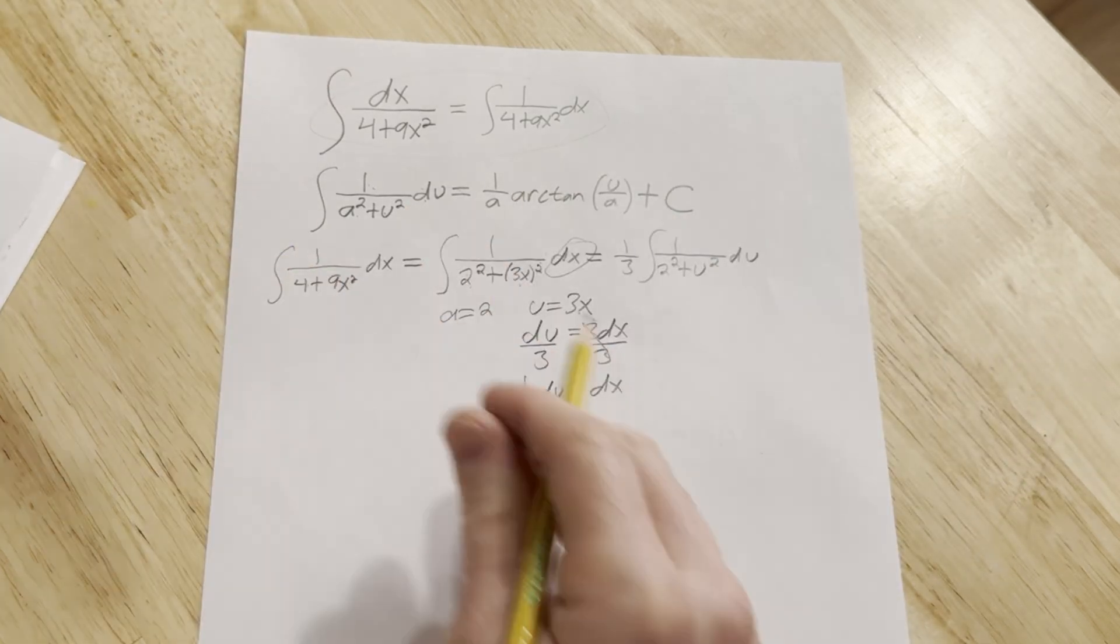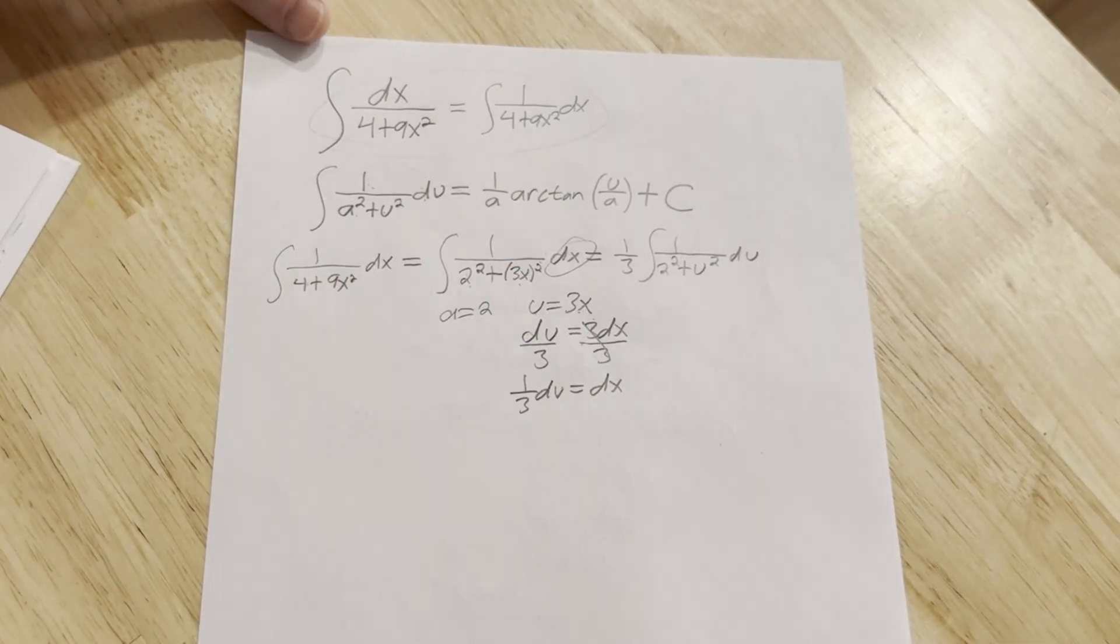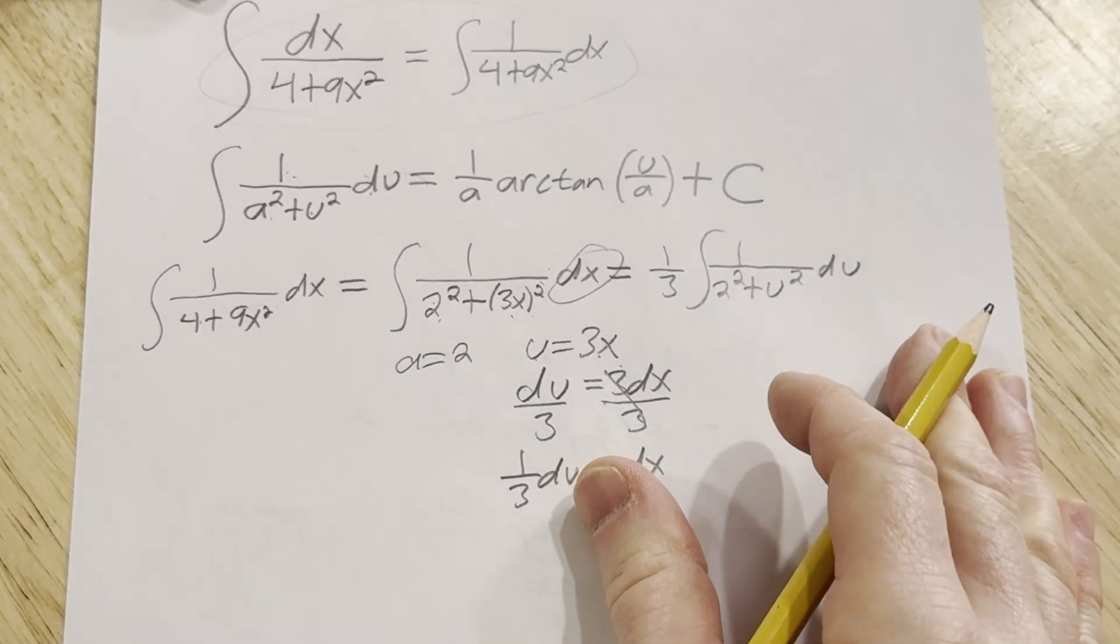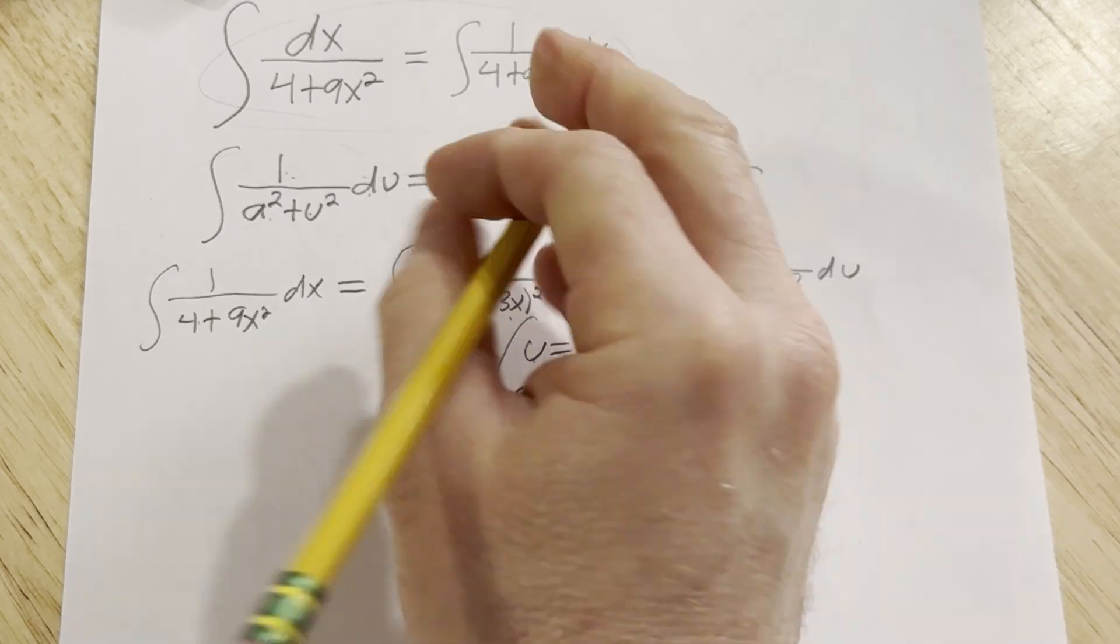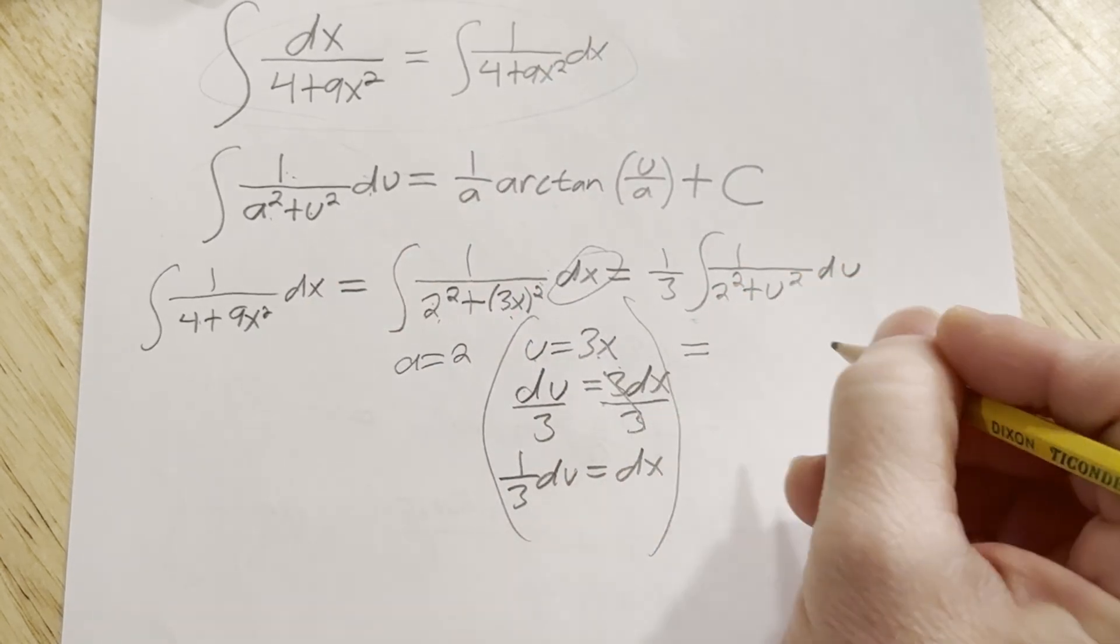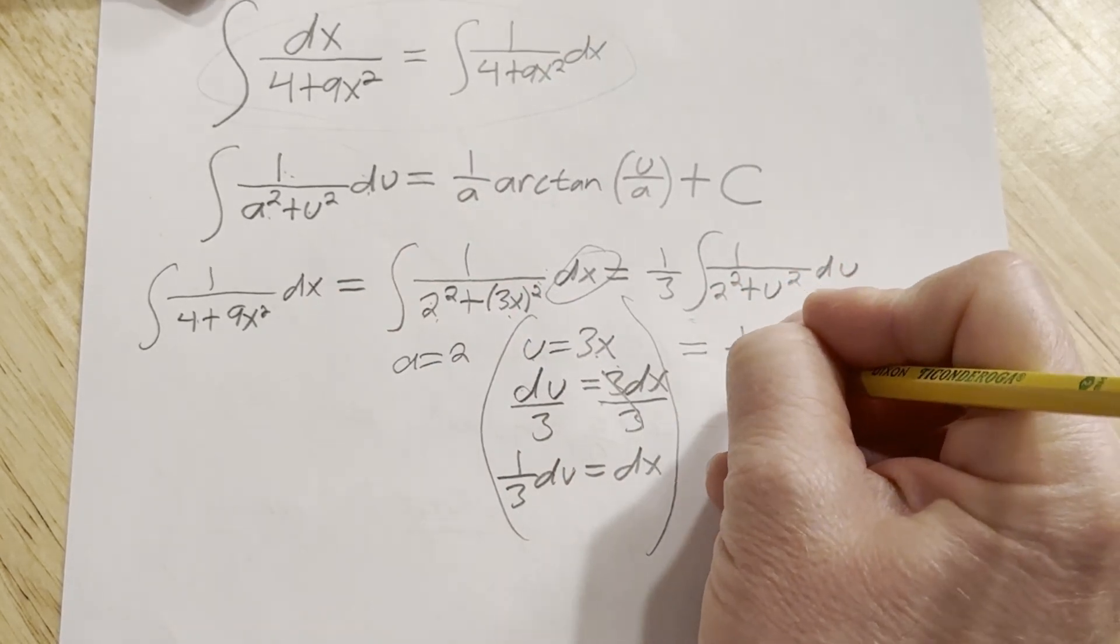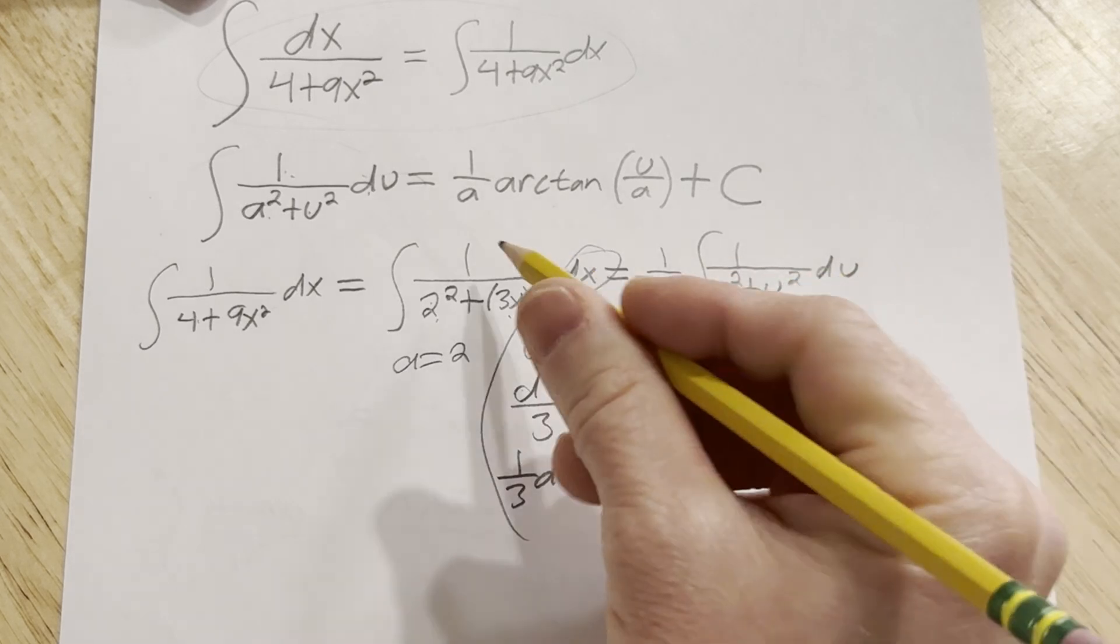And so now we can apply, zoom in a little bit, hopefully you can see. So now we can apply the formula directly to this piece here. So I'm going to put a little thing here to kind of omit that so we can continue here. So it's 1/3. Don't forget the 1/3. Very easy to forget. And then applying the formula, it's 1 over a.